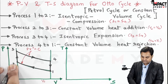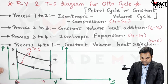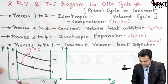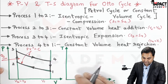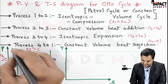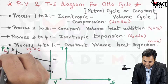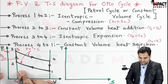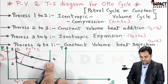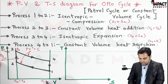During compression, pressure increases from point 1 to point 2. Then process 2 to 3 is constant volume heat addition, where V2 equals V3 — heat is supplied at constant volume. At point 3 we get the maximum pressure, P_max equals P3. Then 3 to 4 is isentropic expansion, during which pressure decreases and volume increases from V3 to V4, and V1 equals V4.